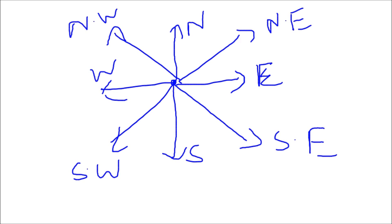The third type is generally a hybrid of both — for example, James was moving towards North, then he turned left, then he was moving towards East, then right. So these are the three types of questions. Let's start with Type 1.